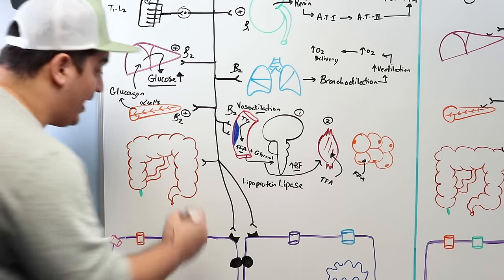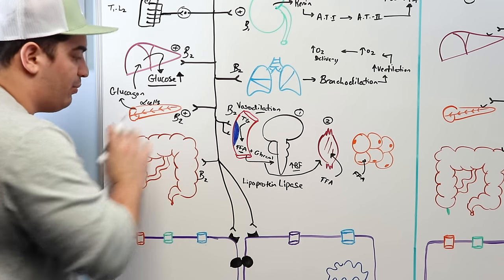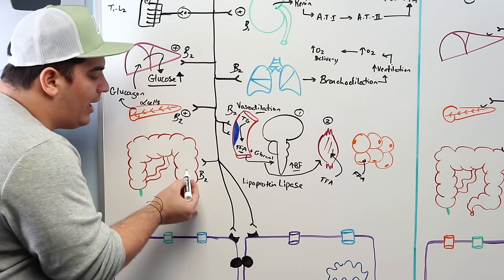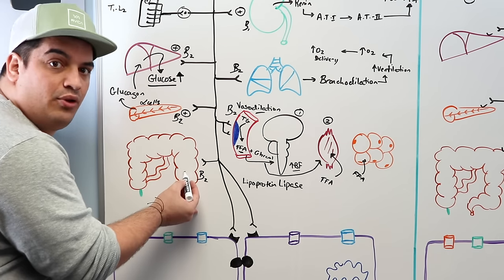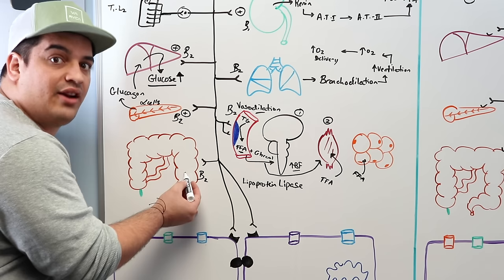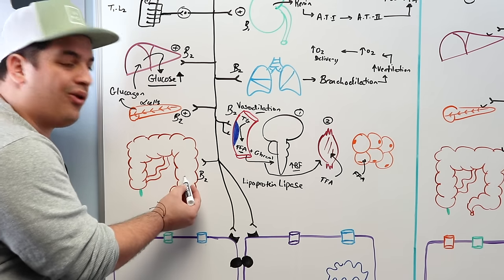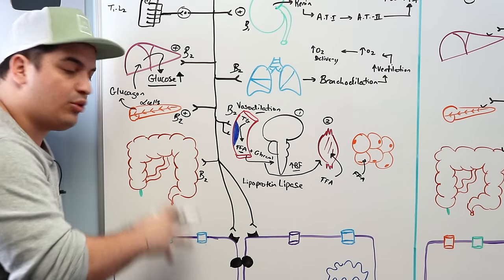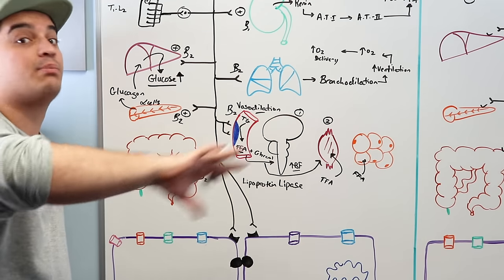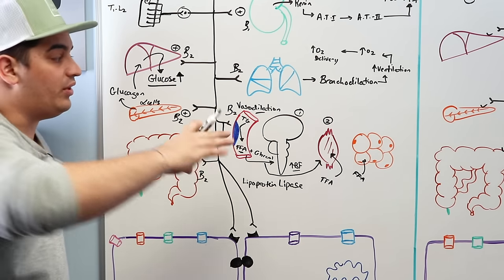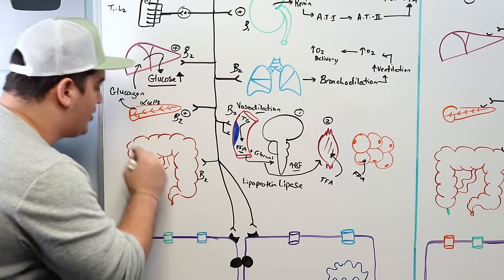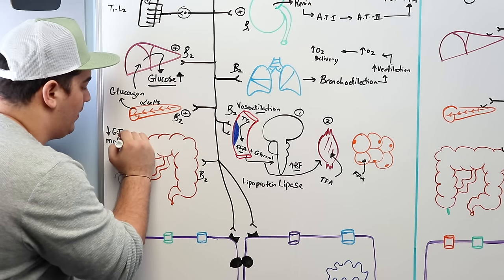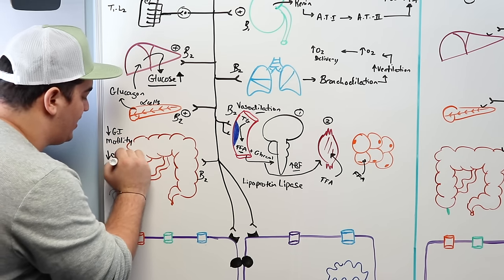In the GI tract, beta-2 receptors on the gastric smooth muscle — not the sphincters — are affected. During fight-or-flight, you don't want to be expending energy on digestion. So the sympathetic nervous system decreases GI motility and secretions, diverting energy and blood flow to more critical tissues like the brain and skeletal muscles.